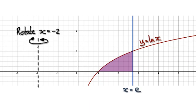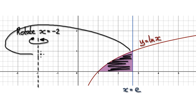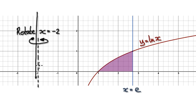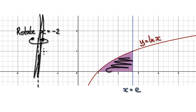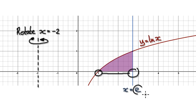Let's give you guys some more practice. Here we've got a graph of y equals the natural log of x. Looking at the purple area, we are going to revolve this 360 degrees along the x equals minus 2 axis. If you rotate it 360 along this axis, you will trace out a 3D solid. Work out the volume of that 3D solid. Remember, it's from 1 all the way to E.